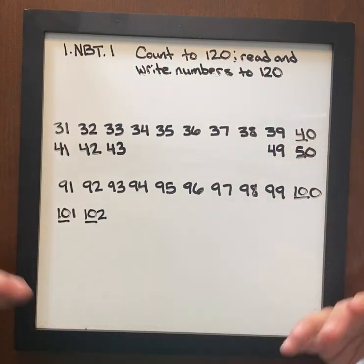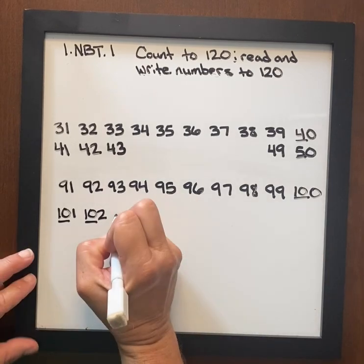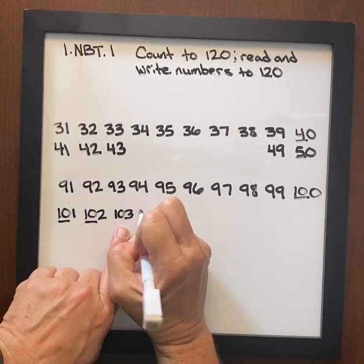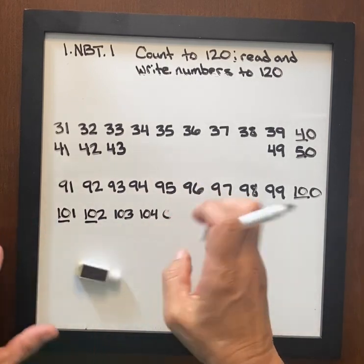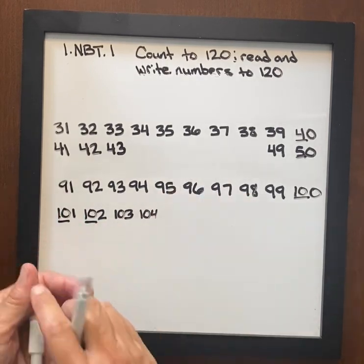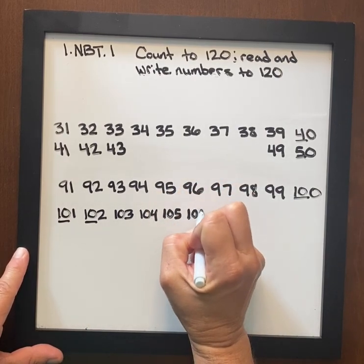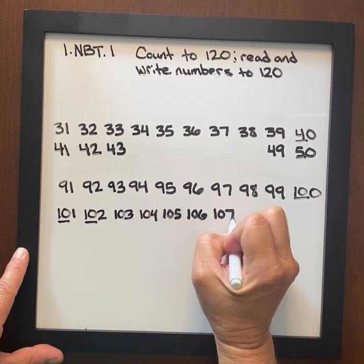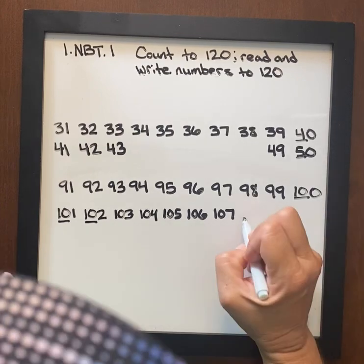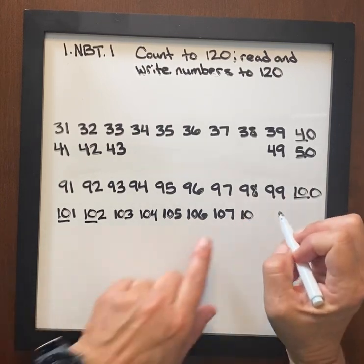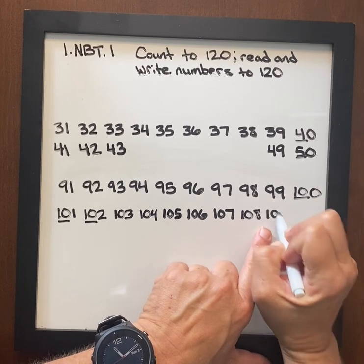And writing this out like a choral count activity, students are able to see this pattern. And then they continue maybe with 103, 104, 105. Again, they're saying it as they write it. 106, 107. And we want to be careful with the 'and' because a lot of people will use 'and' for the decimal. So we kind of try and keep that out, 108 with our whole numbers, 109.